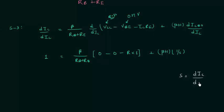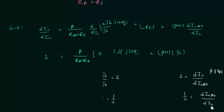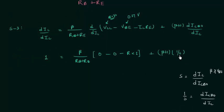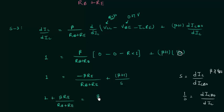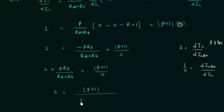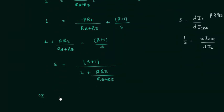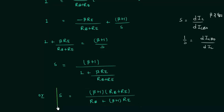β+1 is constant, and differentiation of ICBO with respect to IC equals 1/S, because the stability factor S is defined as the small change in collector current with respect to leakage current at constant β and VBE. So 1/S equals dICBO/dIC. Now we can easily simplify the obtained result to get the stability factor.